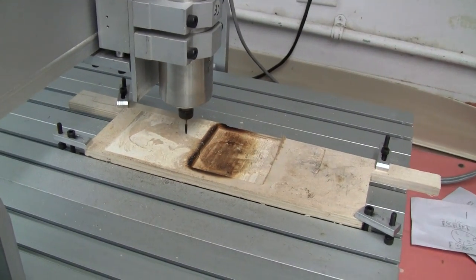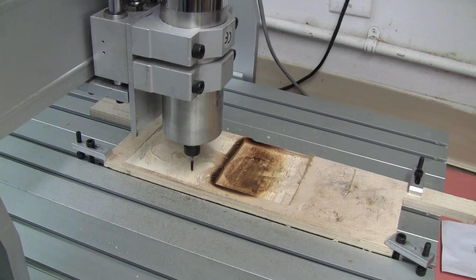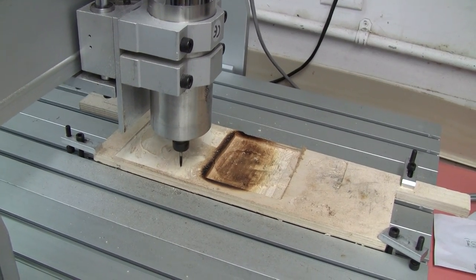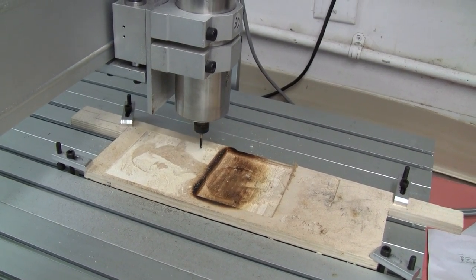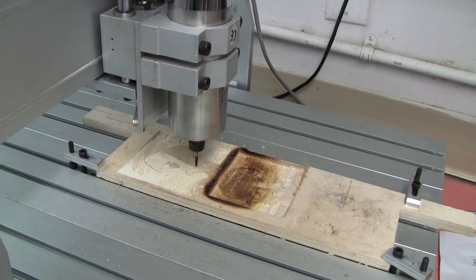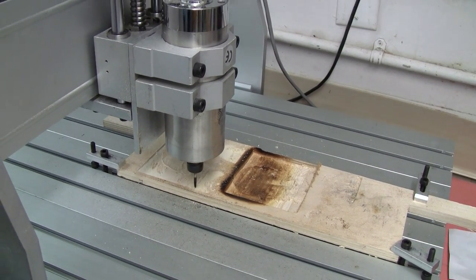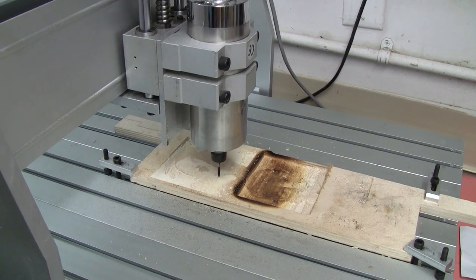This G-code that it's running is engraving a face into the board. It's not really super efficient because it's scanning back and forth, but that's not really limited to the machine, it's more about the G-code.